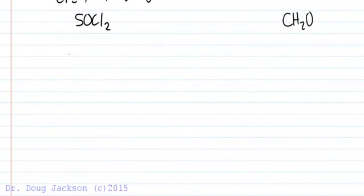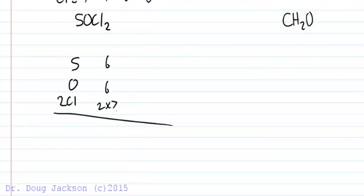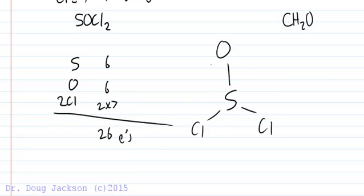How about SOCl2? So count them up. No charge. Sulfur is six, oxygen is six, chlorine is seven. So 14 plus six, there's 20 plus six is 26 electrons. The least electronegative is sulfur. Connect to the outer atoms. Anywhere we want to place the oxygen versus the chlorine is fine. But we have to fill the octets of the outer.